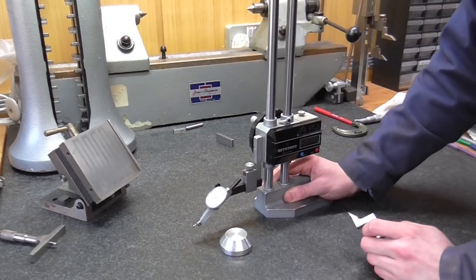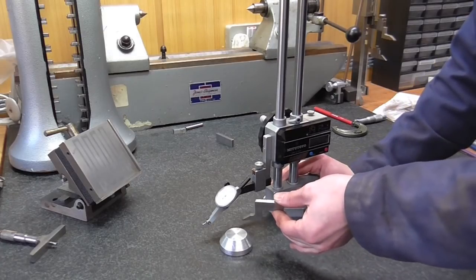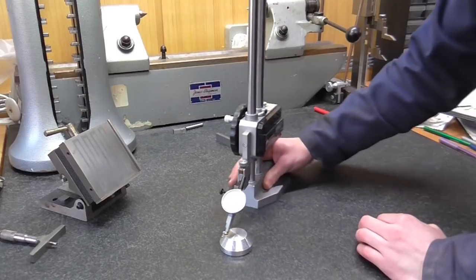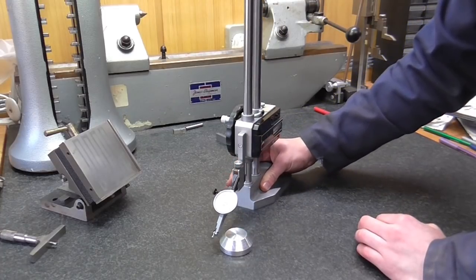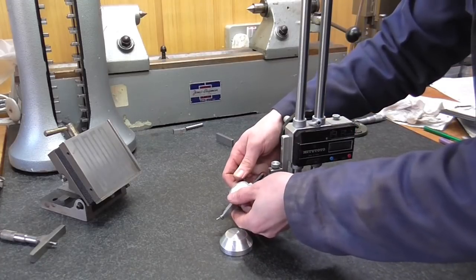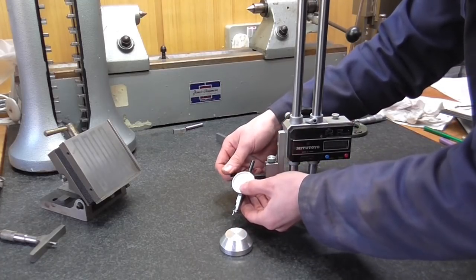Now to do it on the surface table I'm going to use a height gauge, often seen as a scribing attachment, but for this I'm using a dial indicator—you just get a bit more of an idea for what's going on. I'll probably do this in a slightly unorthodox way. I'm going to try and turn this so that you can see both the dial and the readout.